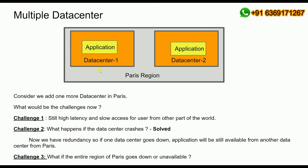What happens if the entire Paris region goes down? Consider a scenario where there is a global outage in the internet service provider and the entire Paris region becomes unavailable. In this case, your application will again be unavailable to users until it is restored. So this is the third challenge: what if the entire Paris region goes down?